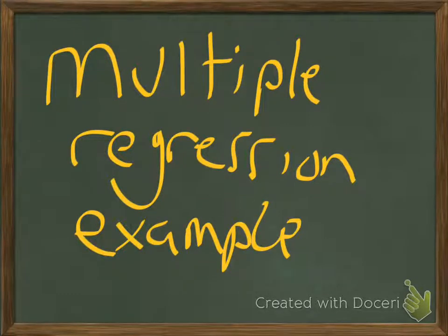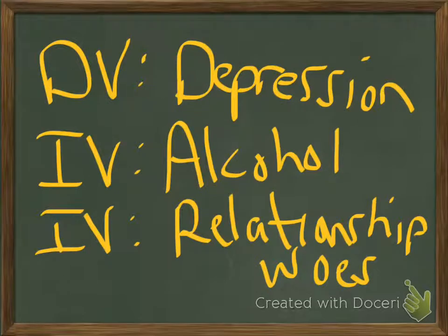Here is an explanation about how multiple regression works. Let's suppose that we have a multiple regression where we are looking at depression — how depressed someone is in a sample of people on a scale from 1 to 6 or whatever. That's the dependent variable, the Y variable. And then we've got two predictor variables, or two independent variables — two different X variables in a regression.